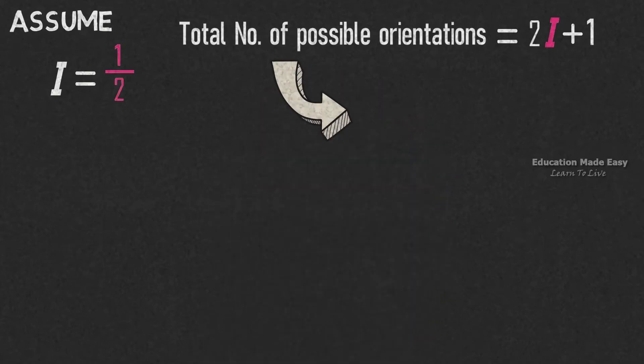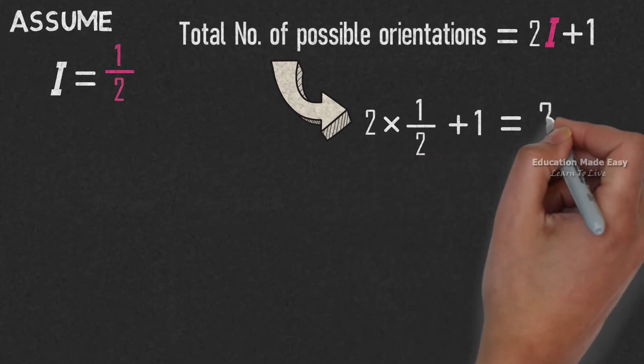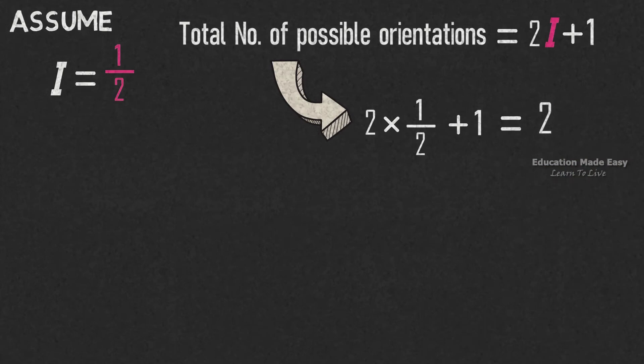Therefore, the equation becomes equal to 2 into 1/2 plus 1, which is equal to 2, giving us the total number of possible orientations.